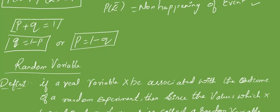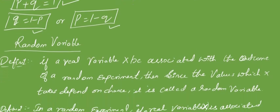A few textbooks use the standard result: probability of an event as P and the non-happening event as Q. This is a standard representation, so P plus Q is equal to 1. If a question asks to find the non-happening or happening of the event, the equations can be rewritten as per the requirement.